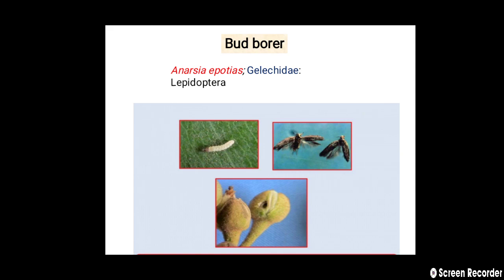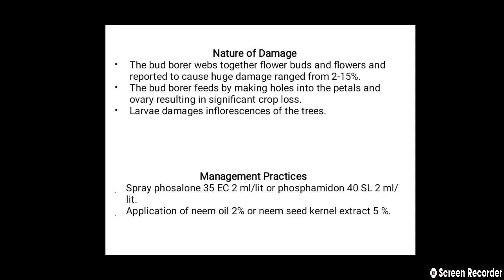The next pest is the bud borer of Sapota, that is Anarsia iphiona. It belongs to the family Gelechiidae, order Lepidoptera. Here you can see the larva, the adult moth, and the damaging symptoms on the bud. Nature of damage: the bud borer weaves together flower buds and flowers and is reported to cause damage ranging from 2 to 15%. It feeds by making holes into the petals and ovaries, resulting in significant crop loss. Control measure: spray with phosalone 35 EC at 2 ml per litre, or apply neem oil 2% or neem seed kernel extract 5%.